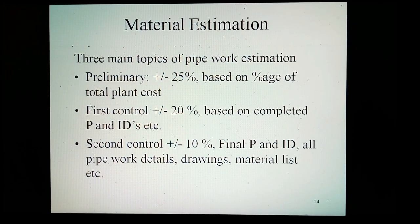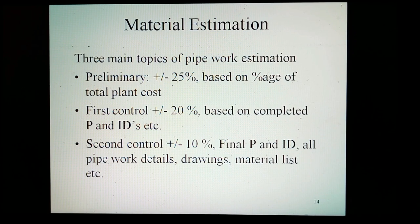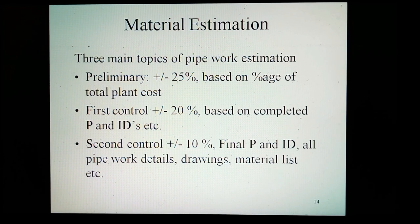Material estimation. There are three main types of pipe work estimation. Preliminary: plus or minus 25%, based on percentage of total plant cost. First control: plus or minus 20%, based on completed P&ID, etc. Second control: plus or minus 10%, based on final P&ID, all pipe work details, drawings, material list, etc.